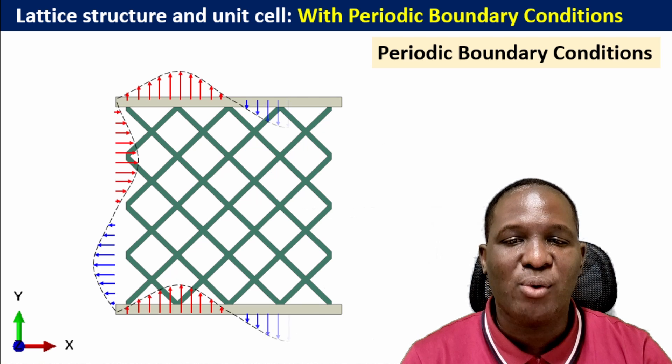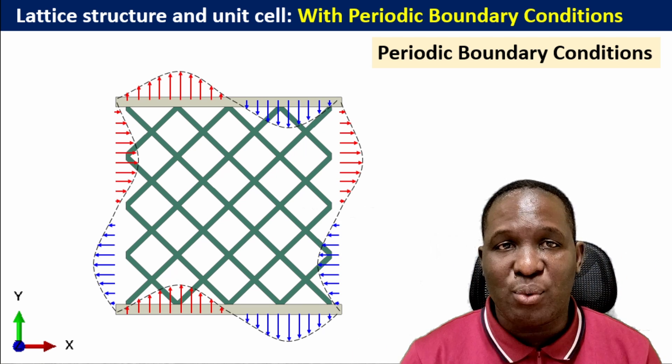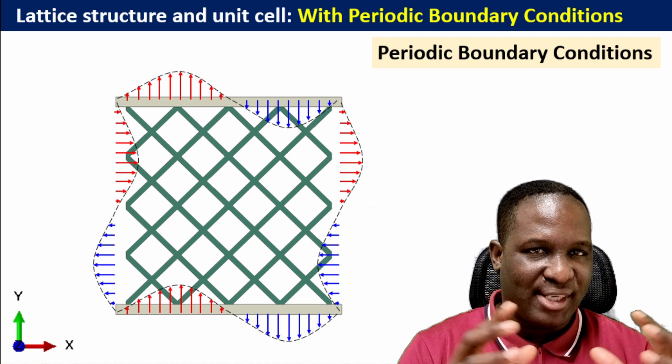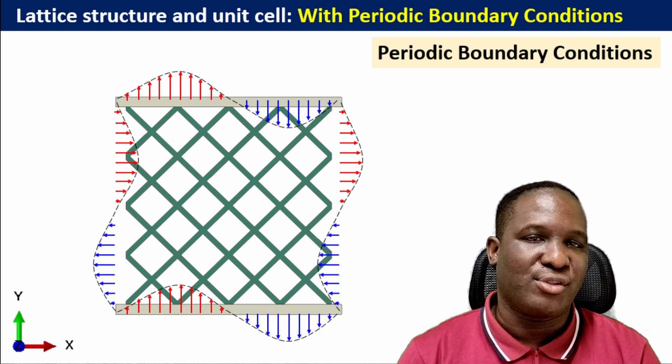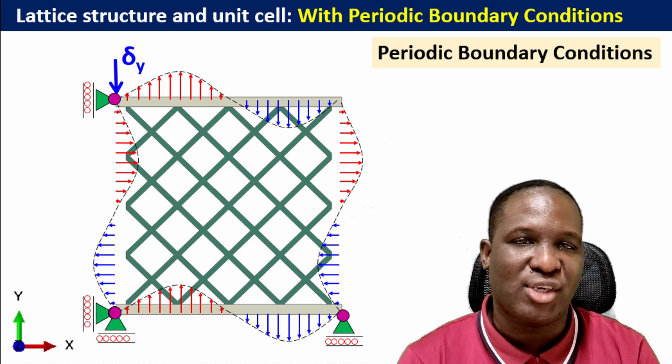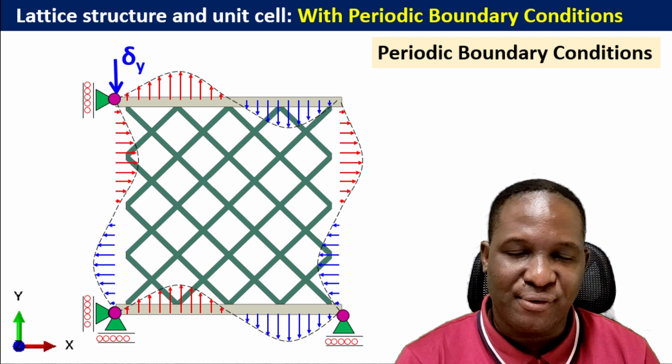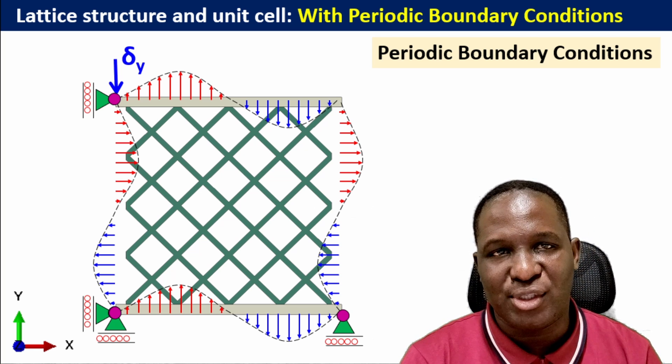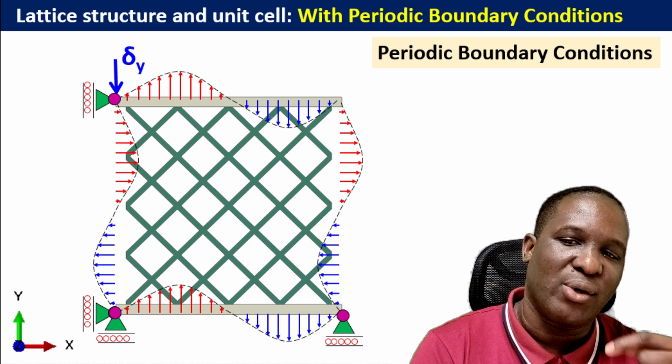The distinctive thing I want to show in this video is that you can use periodic boundary condition for your simulation — this is related to the viewer's question. You can use PBC even for a lattice cell, whether you're modeling a small section or the full structure. I'm going to use the four corner nodes to define how the loading is applied on the domain, specifically these three corner nodes.